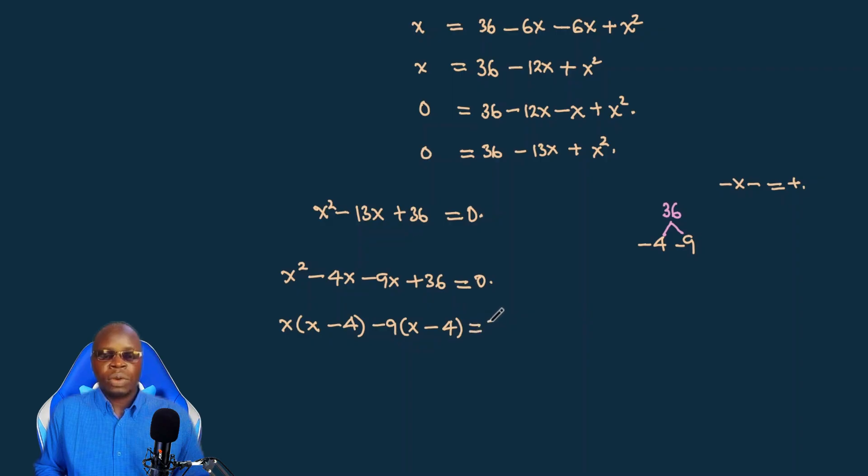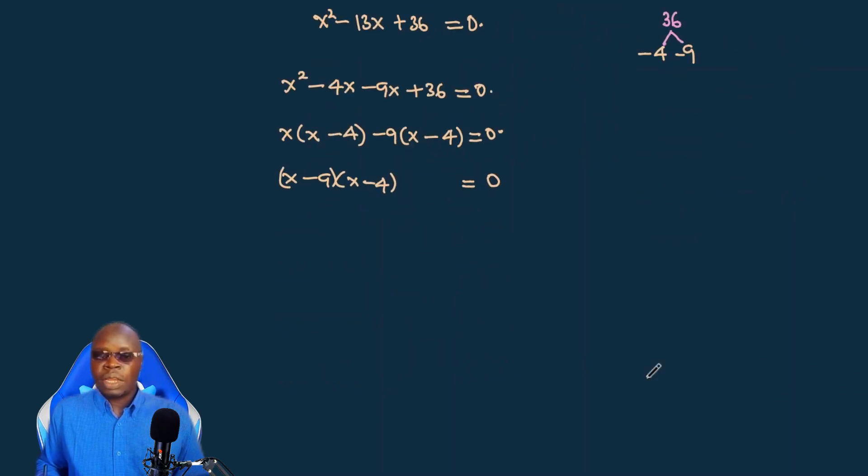Equals zero. Now we collect the coefficient to obtain a new bracket that is x minus 9. We multiply this by any of these brackets, that is x minus 4. This must also give us zero. So we can go on and now solve. You just turn this one here for x. Here that the first bracket, either x minus 9 should give us zero.